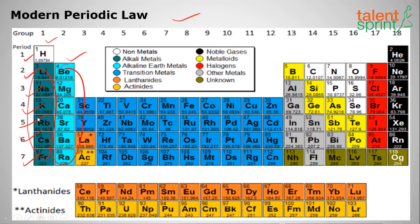These are called alkaline earth metals, and these are called transition metals. Elements 57 to 71 are called lanthanides, and 89 to 103 are called actinides.